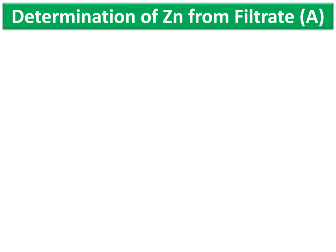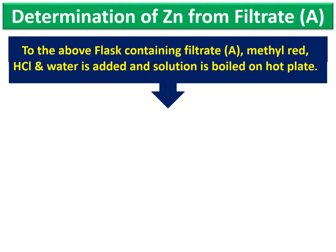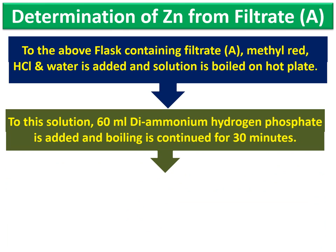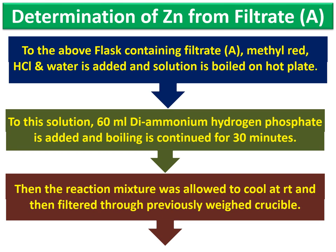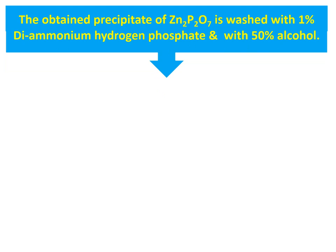Here we will see the determination of zinc from Filtrate A. To the flask containing Filtrate A, add methyl red indicator, HCl and water, and boil this solution on a hot plate. Then add 60 ml of diammonium hydrogen phosphate and continue boiling for 30 minutes.